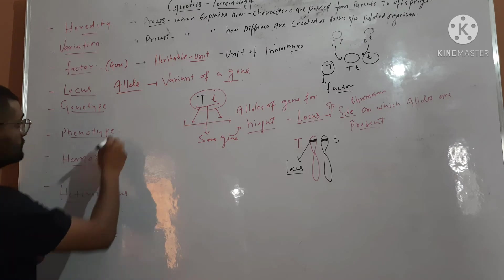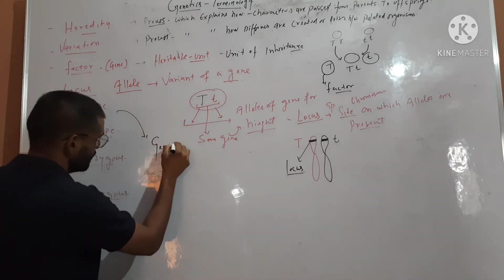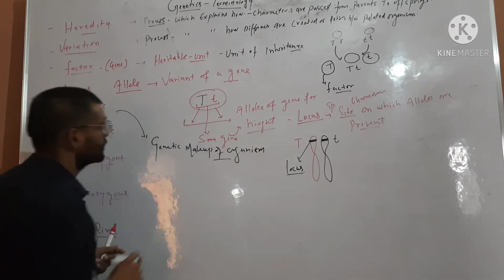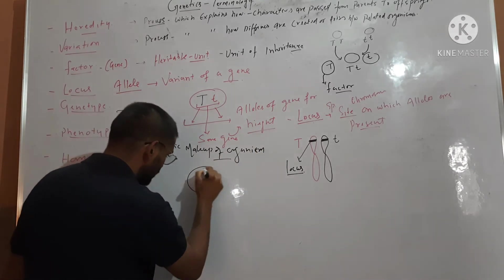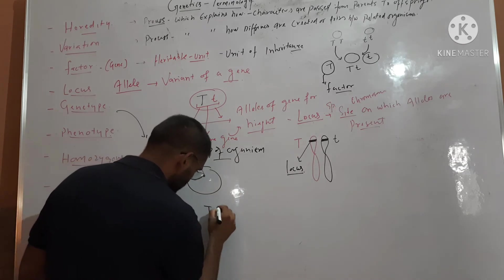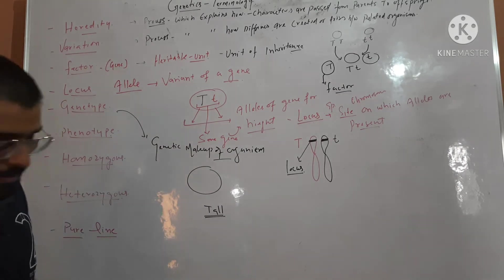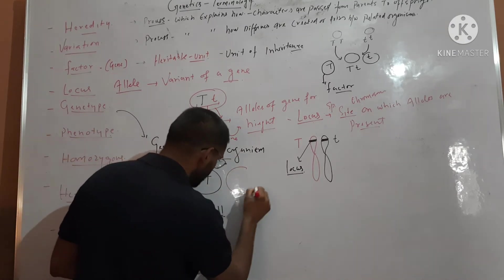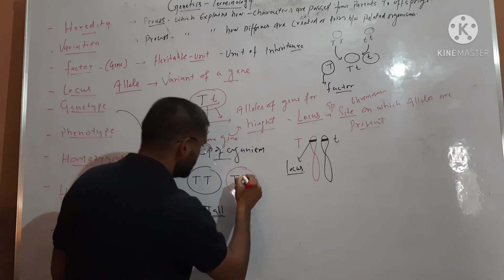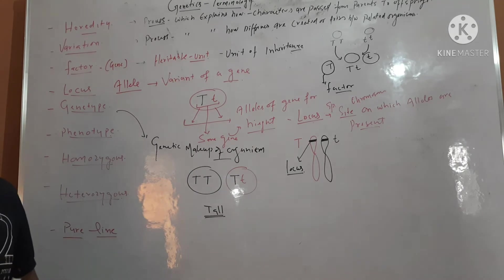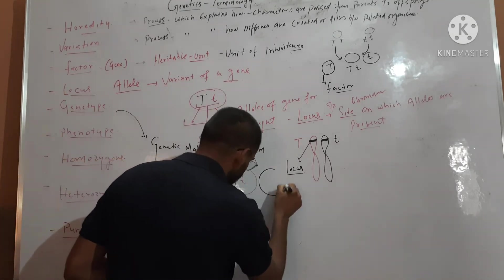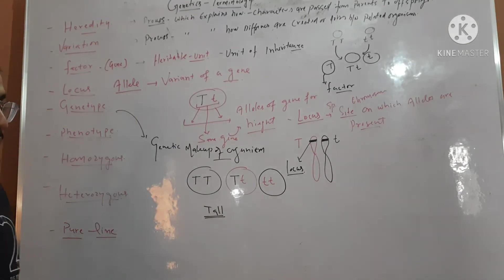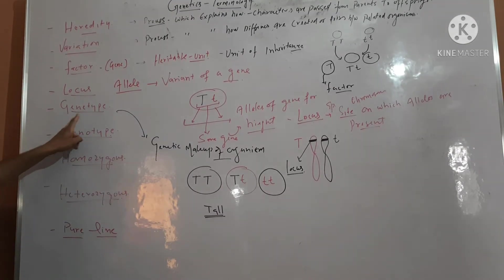Genotype is the genetic makeup of an organism. So we have a plant that is tall — what will be the genetic makeup of this plant? It may be capital T capital T, or it may be capital T and small t. So this is the genetic makeup of the plant. And the genetic makeup of a dwarf plant is small t and small t. So the genetic makeup of a plant is called genotype.